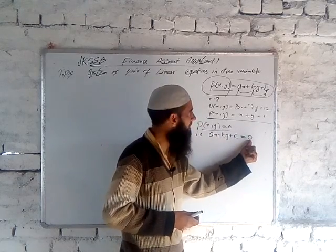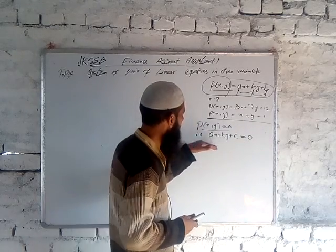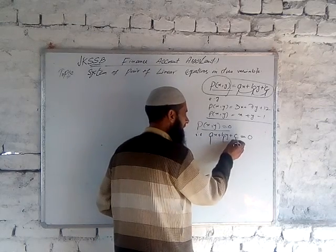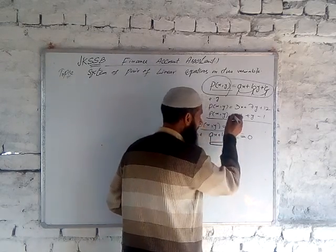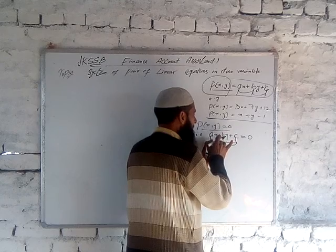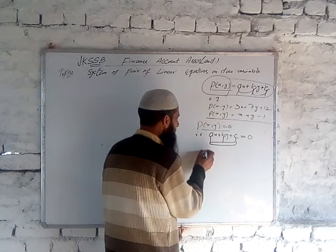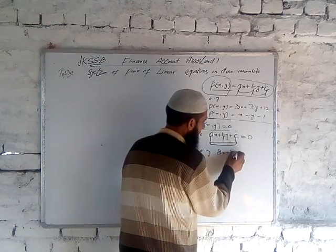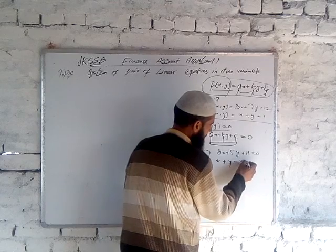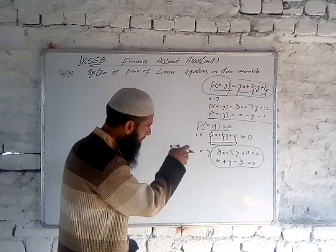When we place the restriction p(x, y) = 0 on the linear polynomial, it is called a linear equation in two variables, where a, b, and c are real numbers. Since real numbers are infinite, we have an infinite number of linear equations in two variables. Examples: 2x + 5y + 6 = 0, and x + y − 2 = 0.